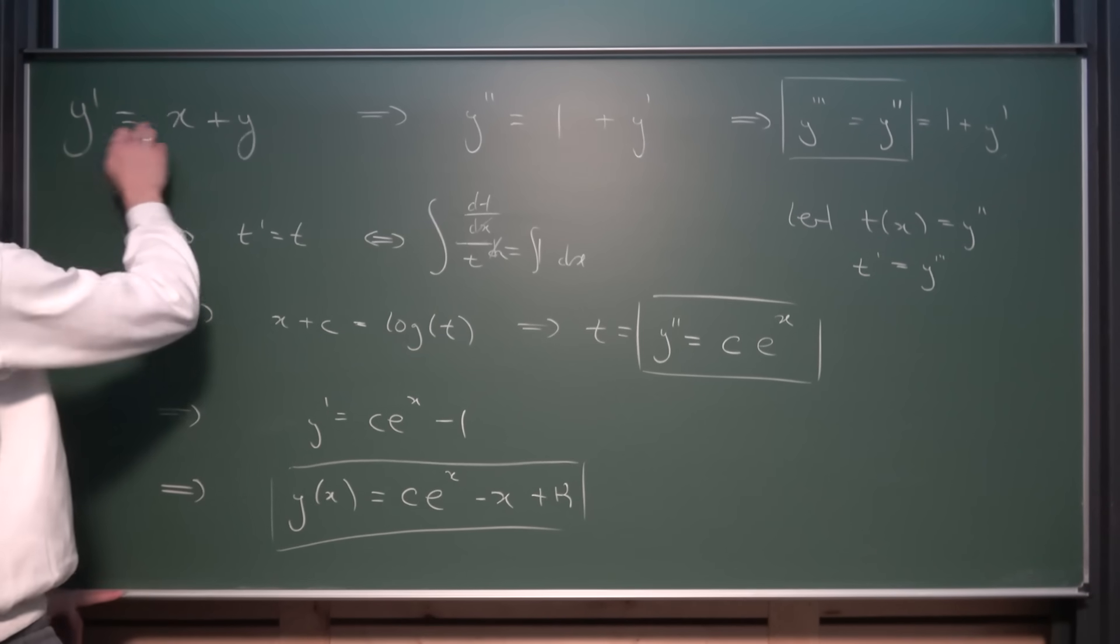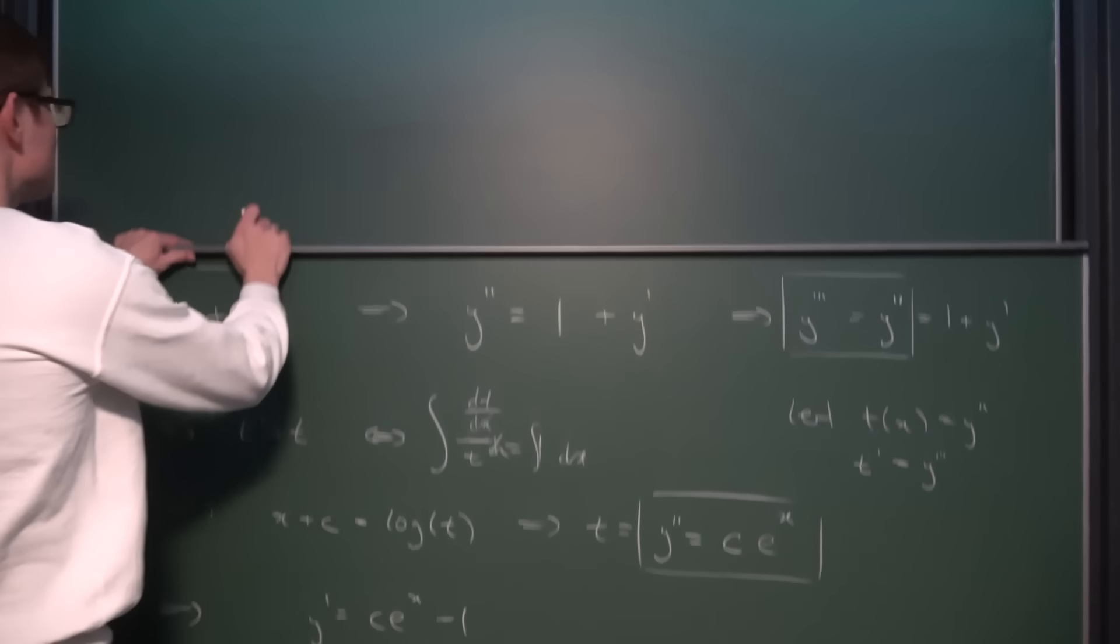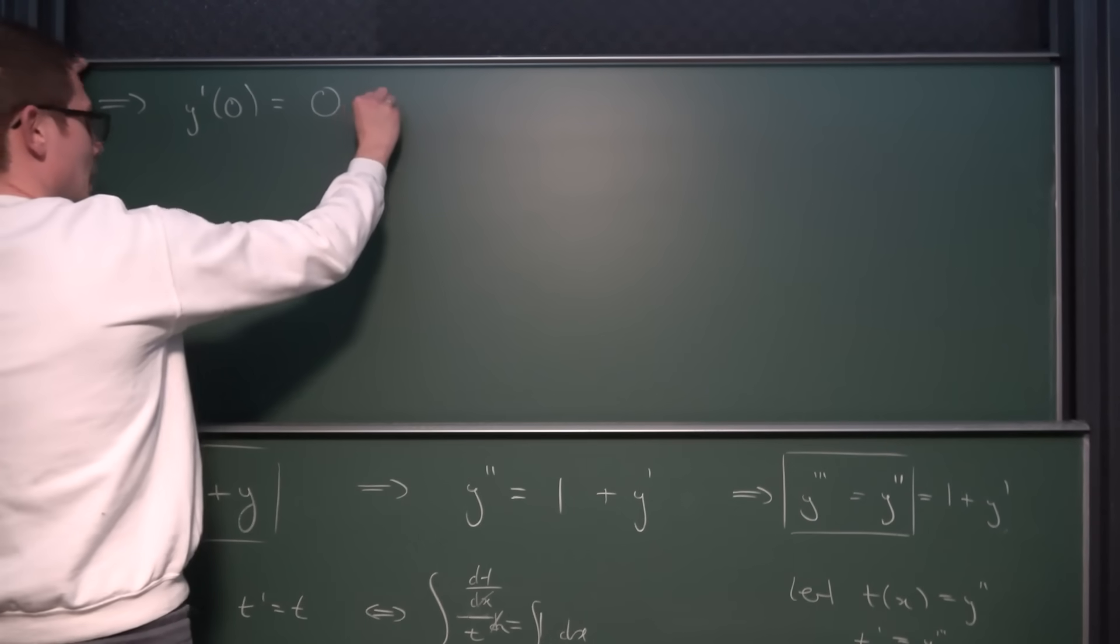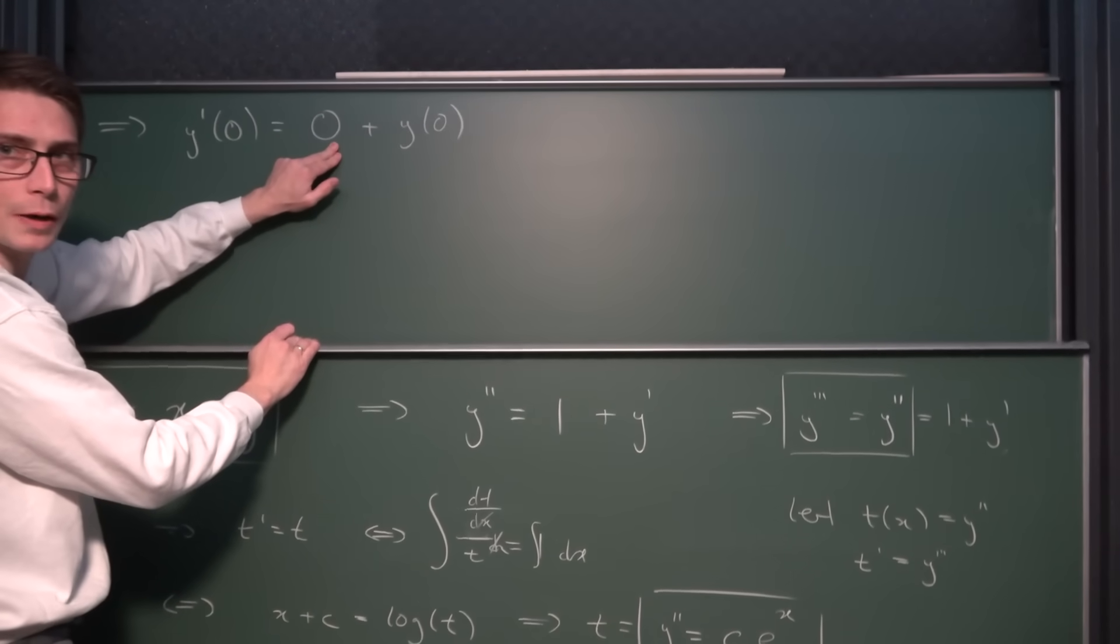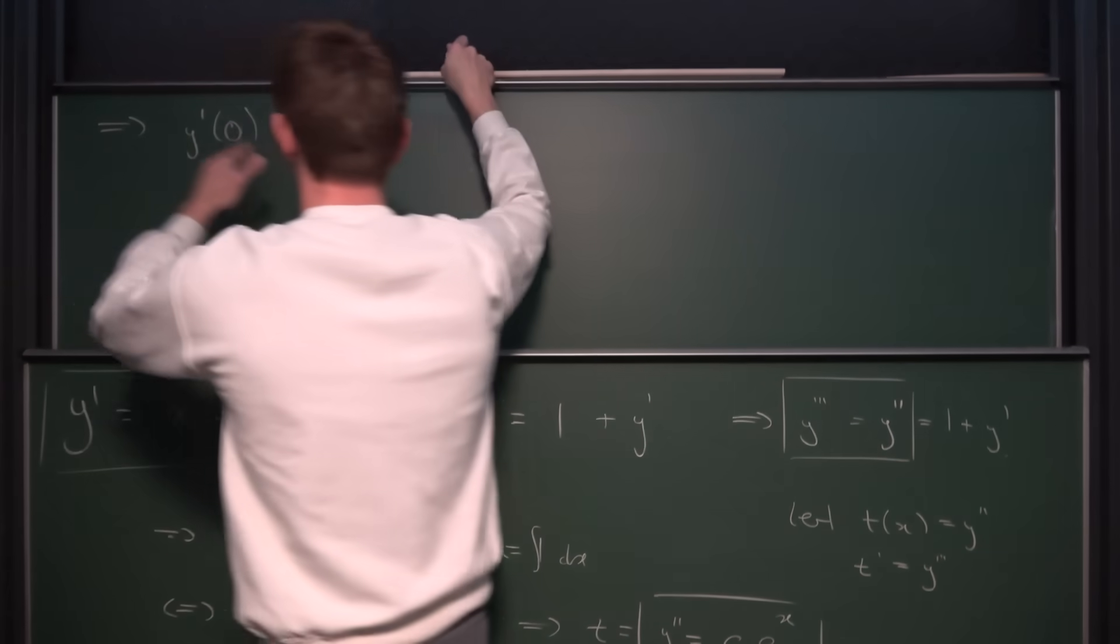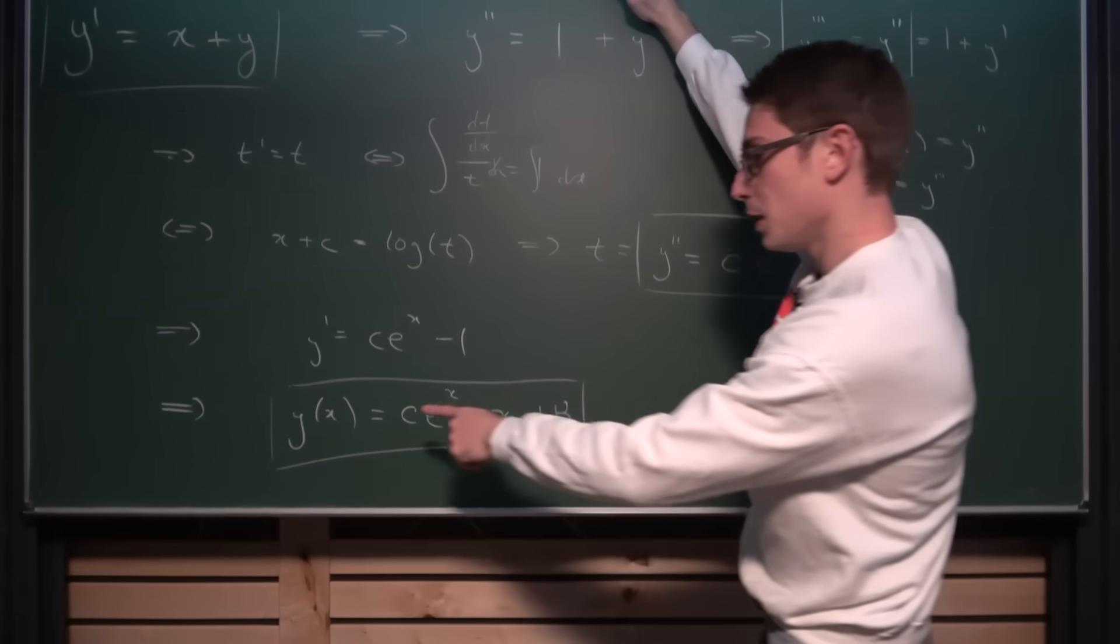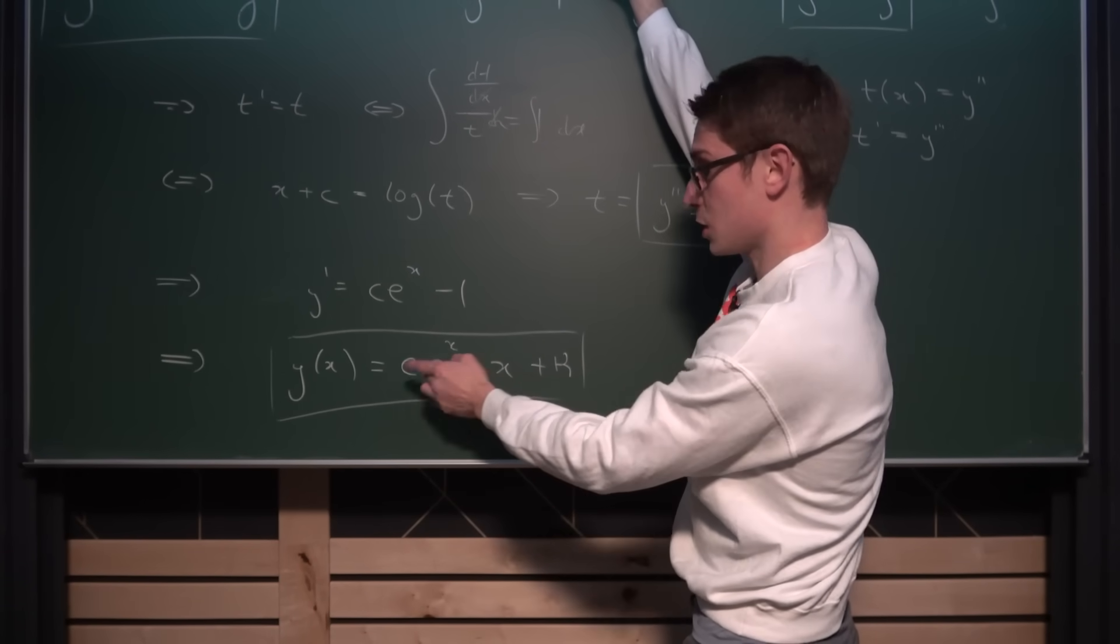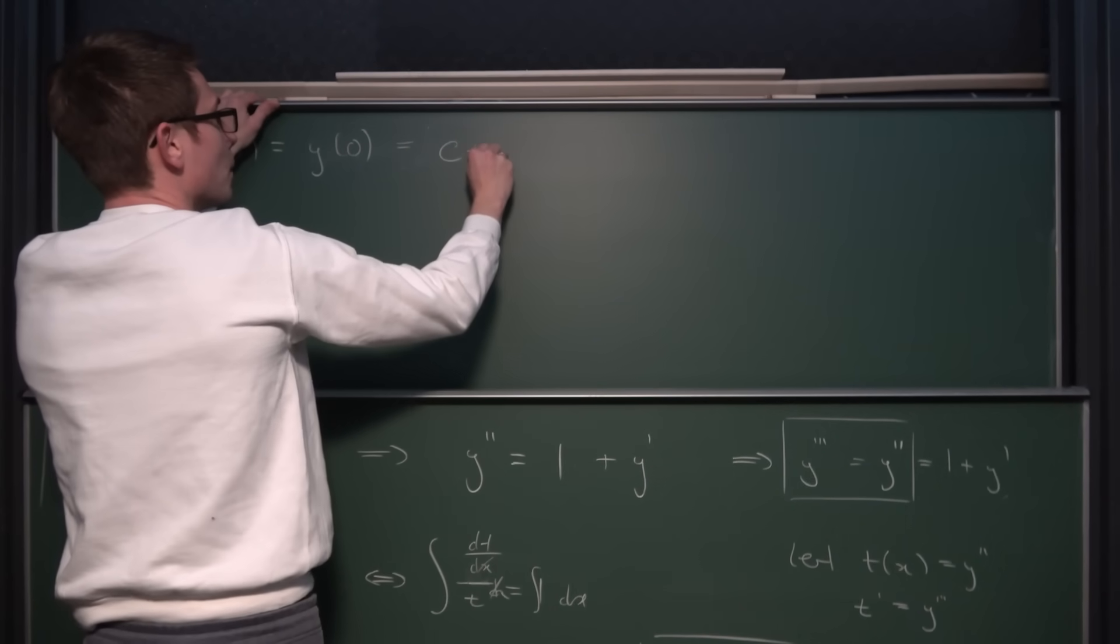So why not plug zero into our X on this first original differential equation, making the X vanish. If we do that, then what we are going to get is that Y prime of zero is equal to zero plus Y of zero. Obviously, this part right here is just going to vanish, giving us overall that Y prime of zero is the same as Y of zero. Okay, if we take a look at Y of zero, then if we plug this in, Y of zero is the same as C times e to the zero, which is just C minus zero plus kappa. So Y of zero is overall the same as C plus kappa.